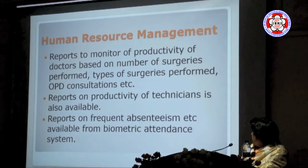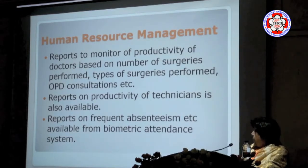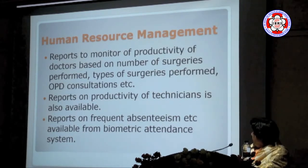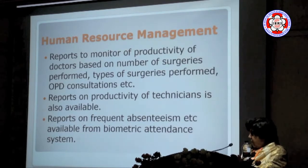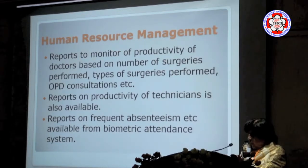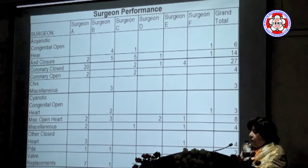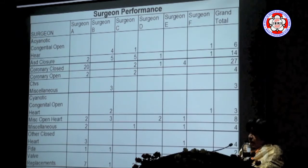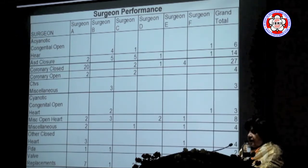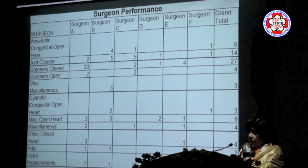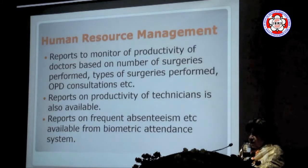Human resource reports monitor the productivity of doctors based on the number and type of surgeries each doctor has performed and OPD consultations. We monitor productivity of each doctor, whose patients are long-staying, and whose patients have had the most complications. The chairperson then advises doctors accordingly and checks whether the targets selected and procedures adopted by each doctor were correct.